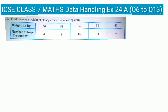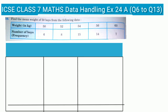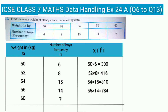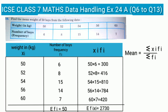Question 10: Find the mean weight of 50 boys from the tabulated data. We convert the horizontal data to vertical columns labeled xi (weight in kg), fi (number of boys), and xi×fi (product). We multiply each xi by its corresponding fi, then find the sum of xi×fi which is 2730, and sum of fi which is 50. Using the formula mean = Σ(xi×fi) / Σfi = 2730 / 50 = 54.6 kg.